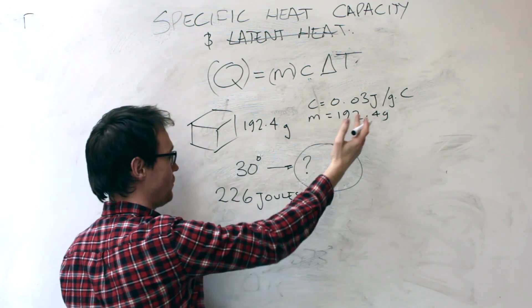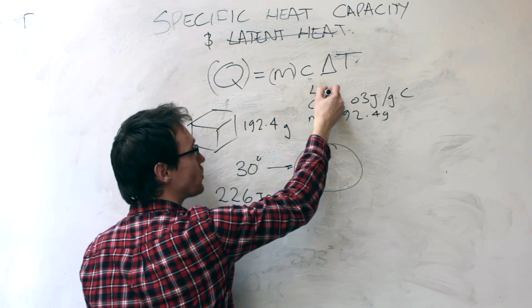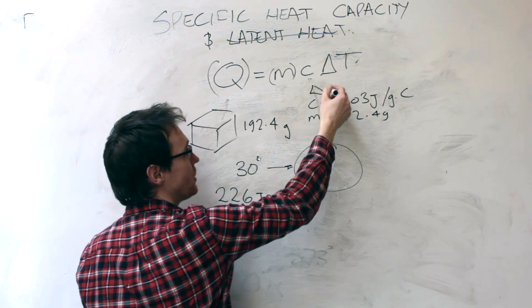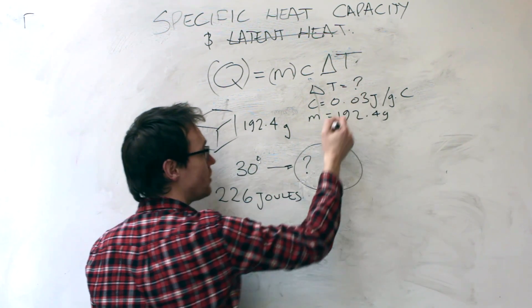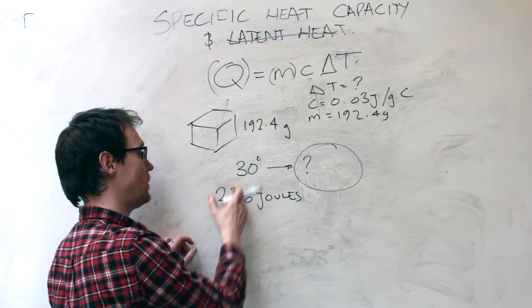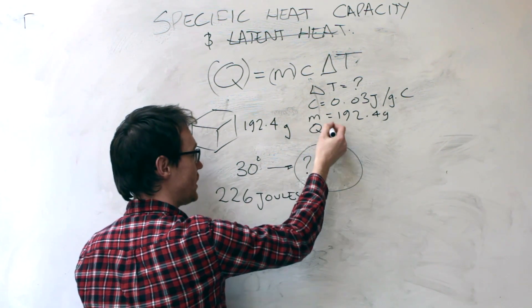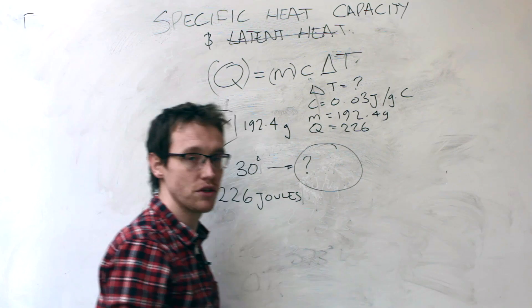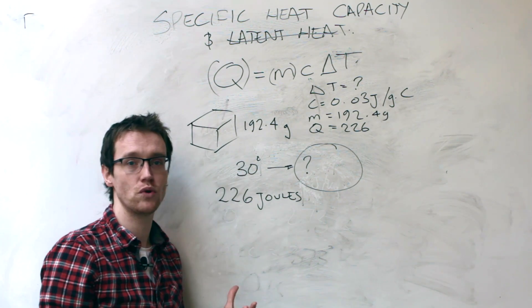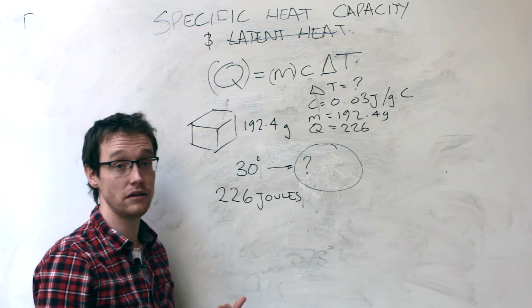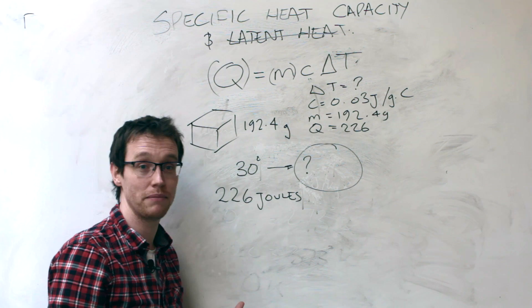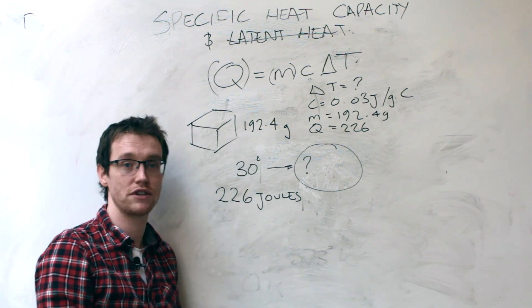And it looks like we're given Q, which is 226 joules. Something to look out for is whether it's megajoules or kilojoules. If it's kilo, times it by a thousand. If it's mega, times it by a million, and so on. Just use your SI prefix conversions.